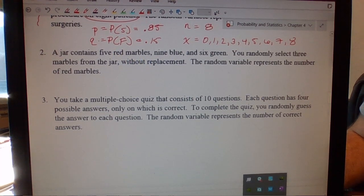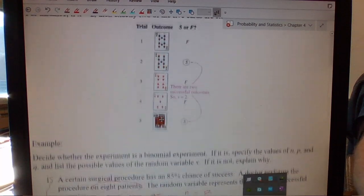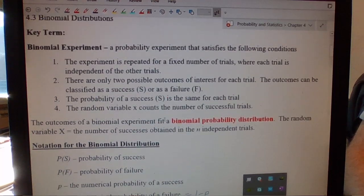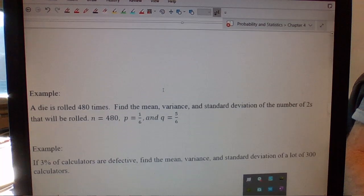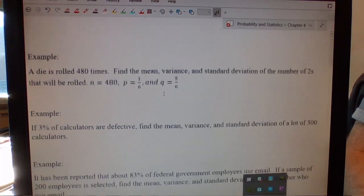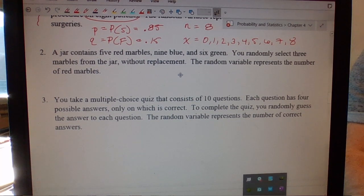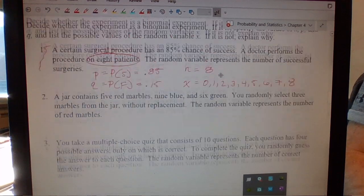If we go back up to the conditions required to be a binomial distribution, these four conditions right here - it says the experiment is repeated for a fixed number of times. So are we doing that a fixed number of times?